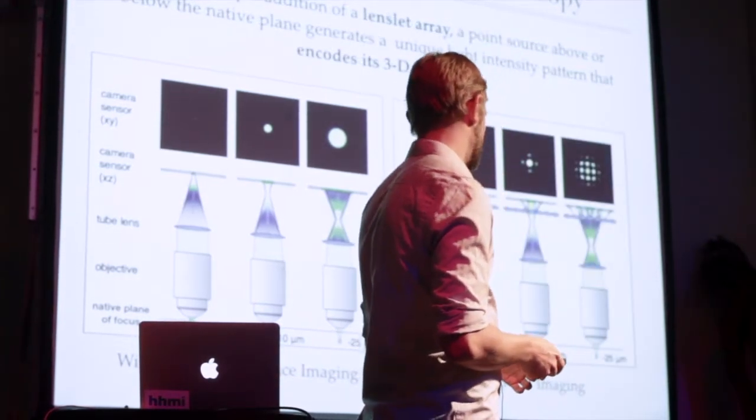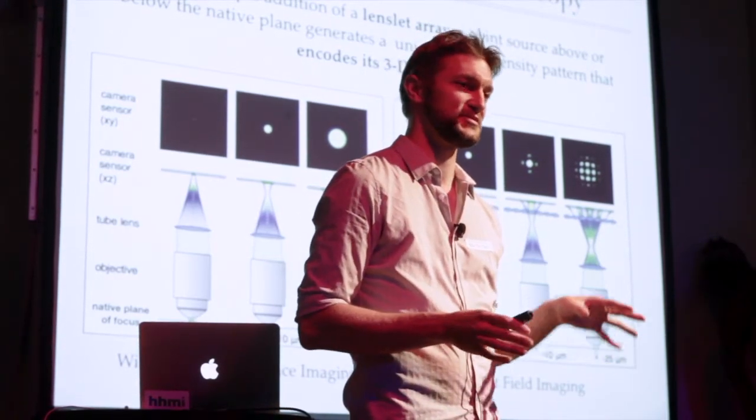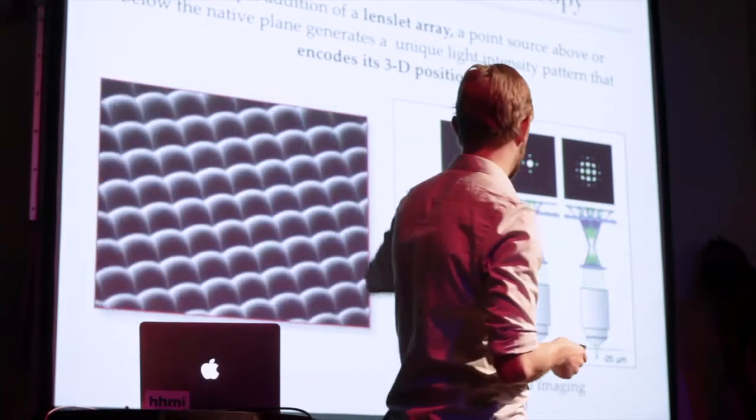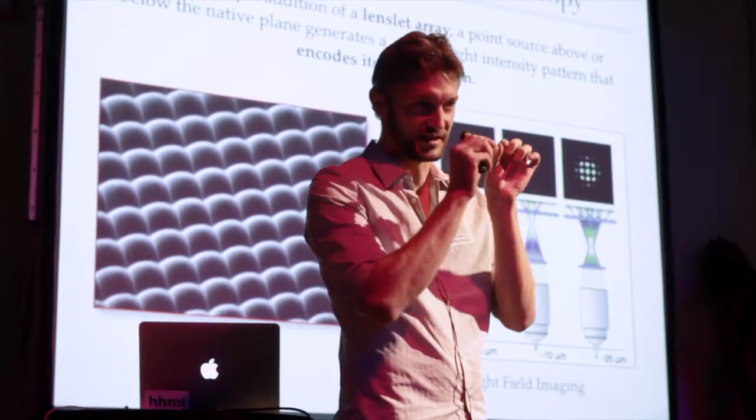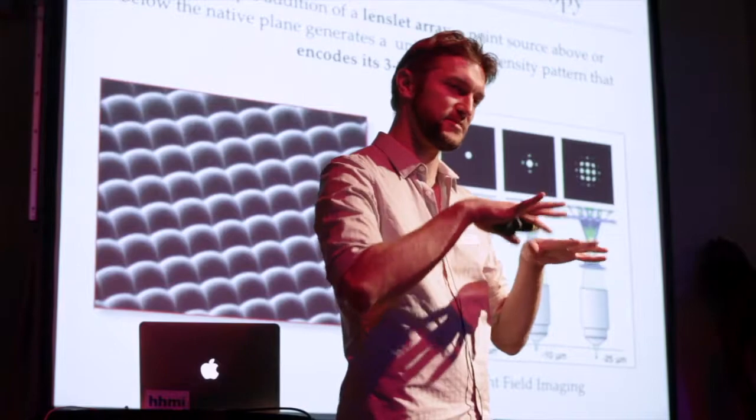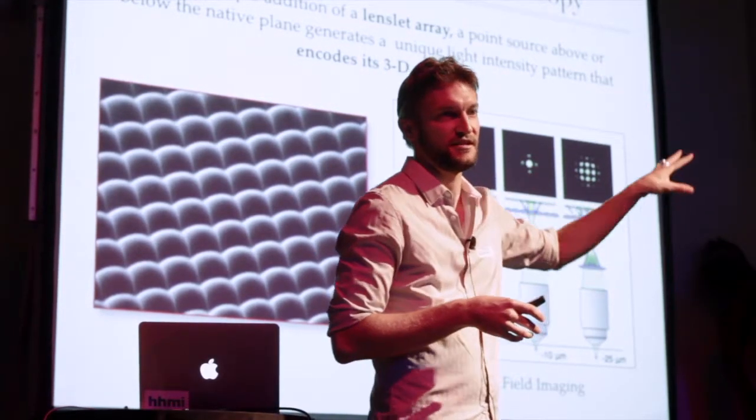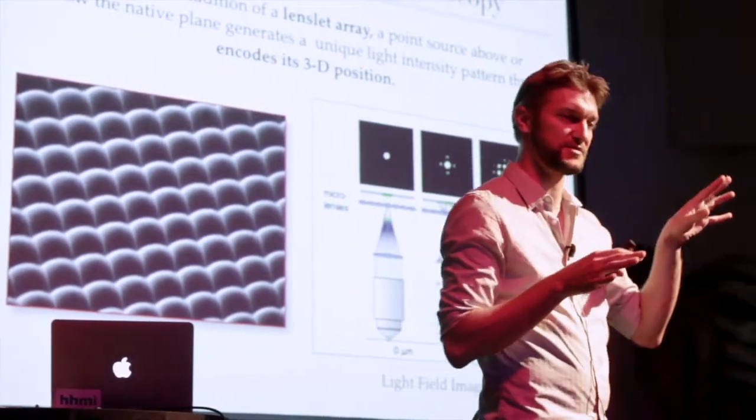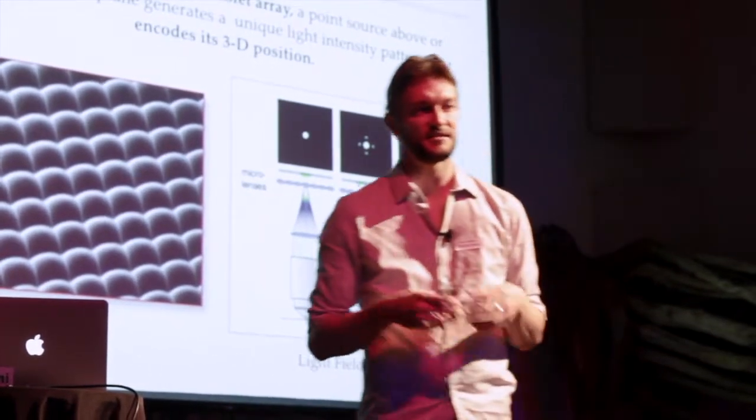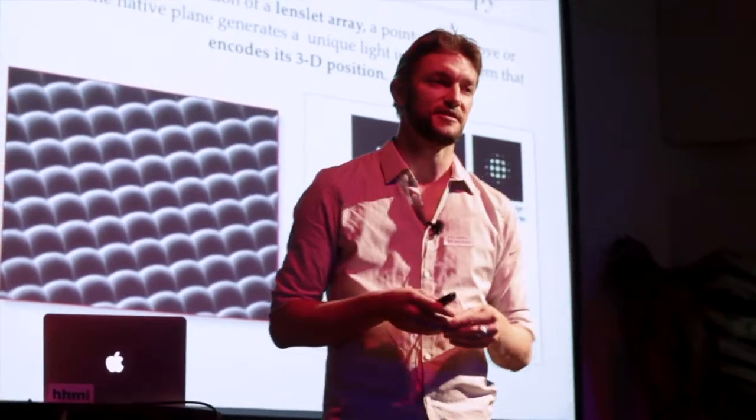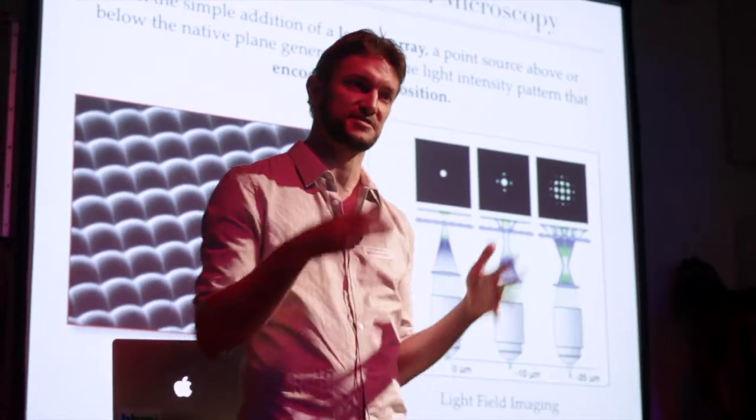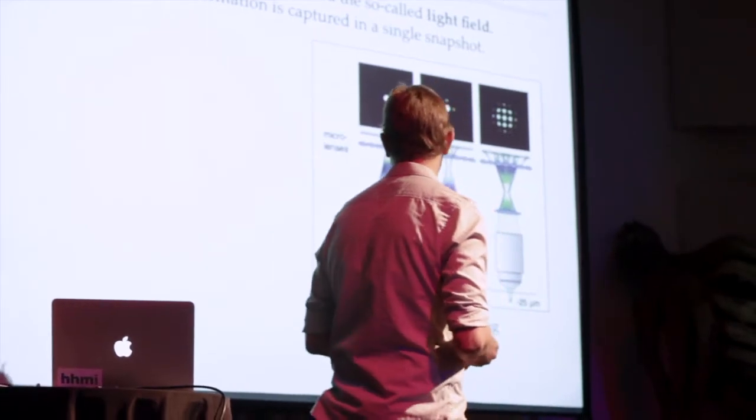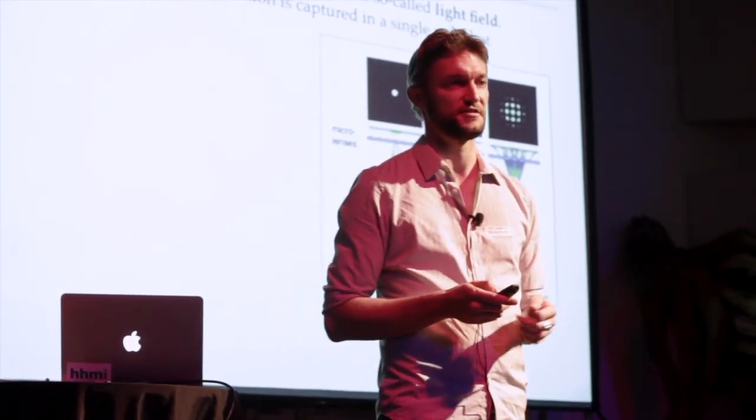So a light-field microscope is actually a very simple modification of a standard fluorescence microscope. You just take the sensor and push it back a little bit and interpose a microlens array. And a microlens array is this little micro-fabricated optic, which has a bunch of these tiny little lenses. And these lenses kind of redirect the light into this interesting pattern on the sensor. And the way that this works, in essence, is that every position in the three-dimensional volume produces a slightly different but very unique and kind of distinctive pattern on the sensor. And it sort of encodes the position of that point on the sensor in a way that allows us to computationally reconstruct where that point was with fairly high accuracy.